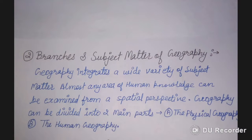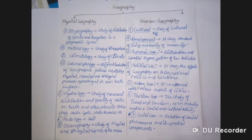From the spatial perspective, geography can be divided into two main parts: physical geography and human geography. These are the two broad branches, each with further classifications. We will study physical geography first.